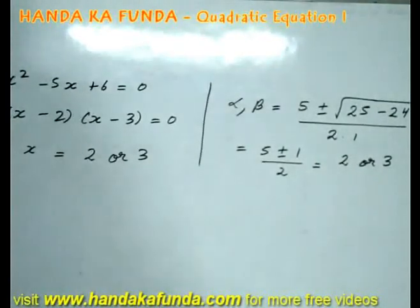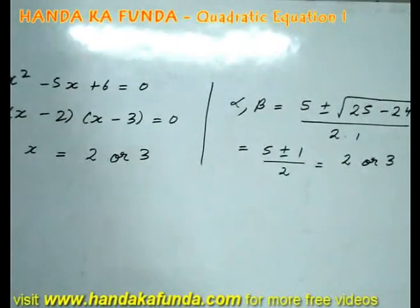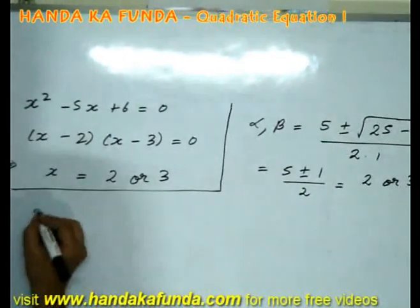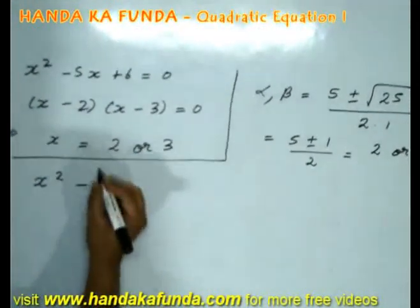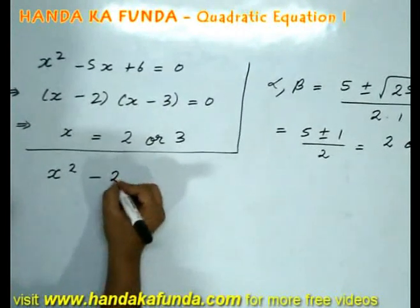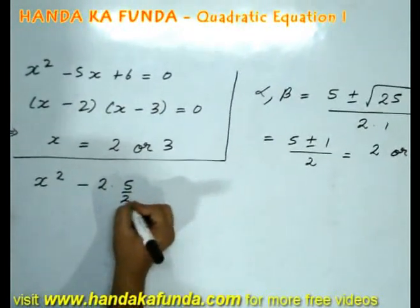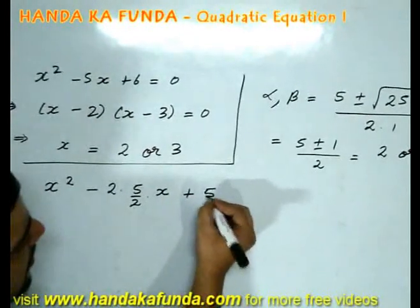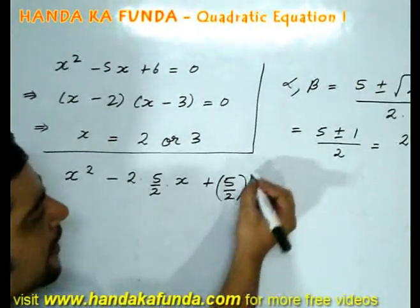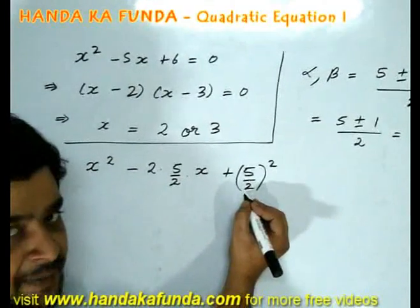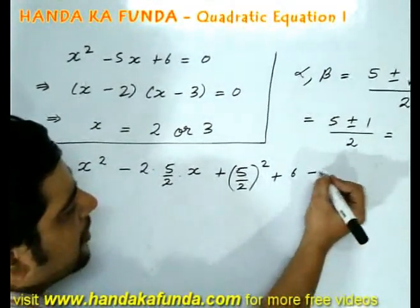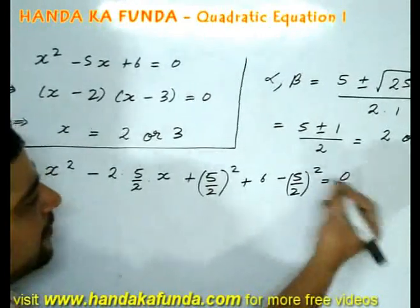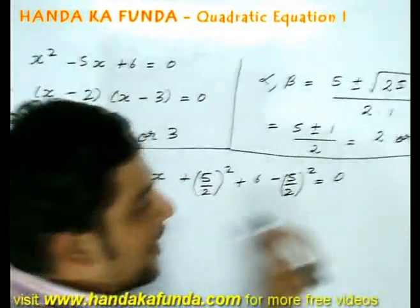Another method which can be used for solving a quadratic equation is completing the square method. What I am trying to say is x square minus 5 into x plus 5 by 2 whole square. Since I am adding the 5 by 2 whole square, I need to subtract a 5 by 2 whole square. You will soon realize why I am doing this.